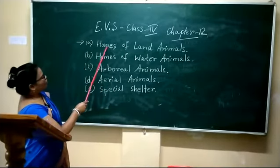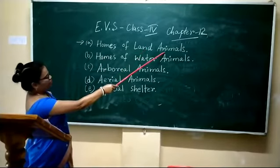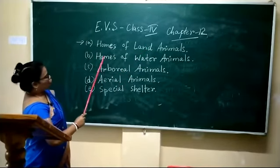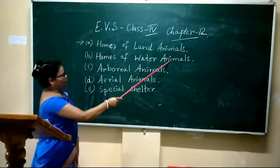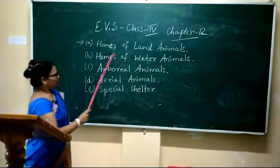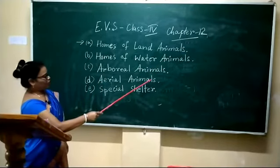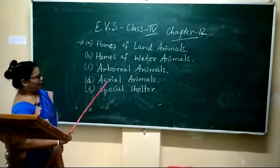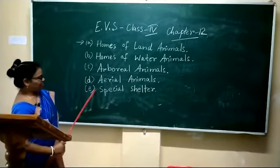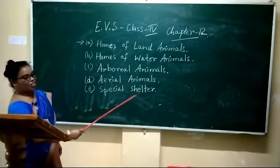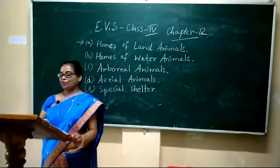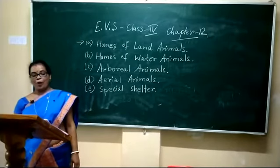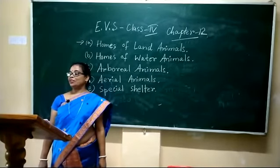Number one: homes of land animals. Number two: homes of water animals. Number three: arboreal animals. Number four: aerial animals, hives, and special shelters. Now, first we shall learn about homes of land animals.